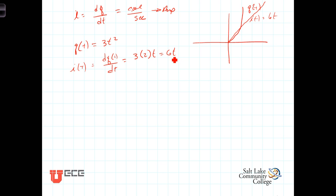So, after one second, you'd have 6 Coulombs per second going. At the end of two seconds, you'd have 12 Coulombs per second flowing, and so on.